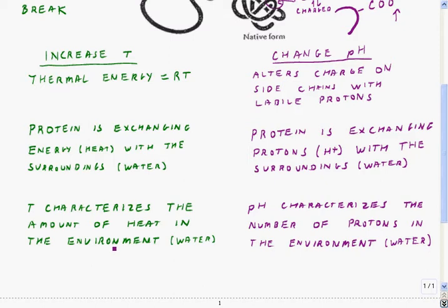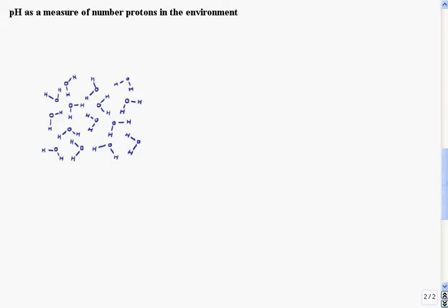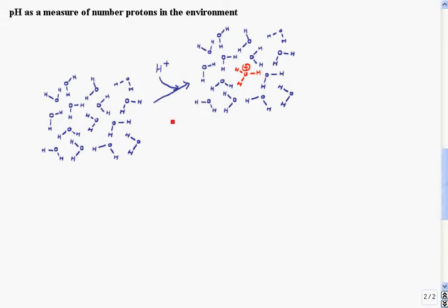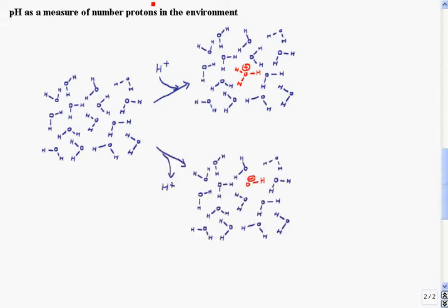When we were doing heat exchange, heat either went into water if it was given off by a reaction, or if the reaction absorbed heat, it took that heat from the water. The same applies here — for the most part, the protein is exchanging its protons with the water. So the pH is a measure of the number of protons in the environment in the same way the temperature is a measure of the amount of heat in the environment. H-plus just refers to a bare proton; when it goes into water, it attaches itself to one of the water molecules, making the species H3O-plus. If water gives off a proton to something, what's left behind is OH-minus.